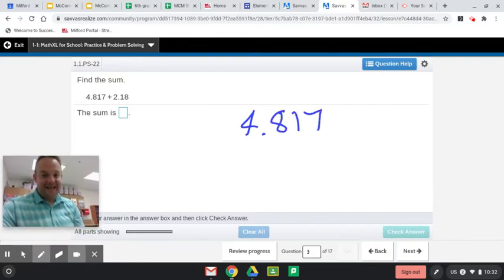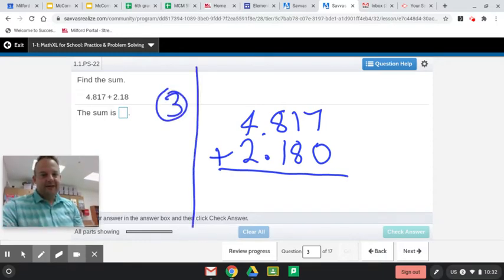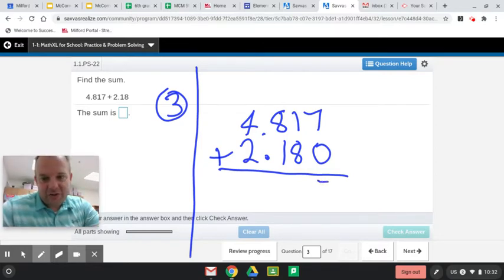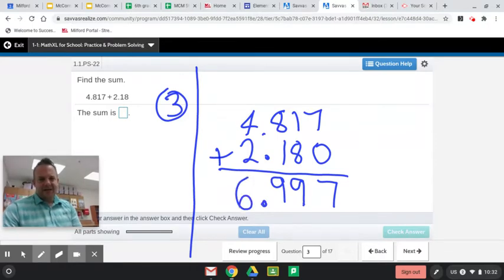4 and 817 thousandths plus 2 and 18 hundredths. Then it's always good to show them in your notebook. Like this is number 3. You would put a 3 there. This is a line. And you would put lots of spacing between so that everything looks good and neat in your math notebook. So you should be writing these out in your math notebook. Please avoid doing these on the calculator because you've got to know how to do them without a calculator.